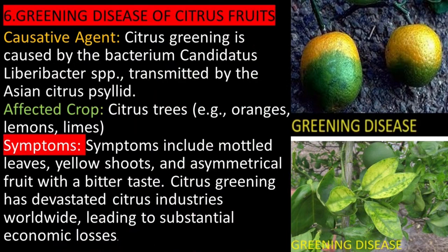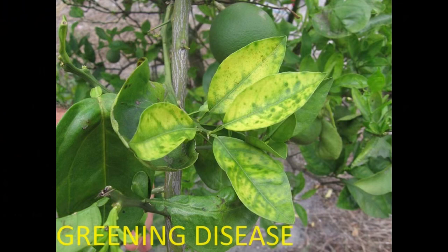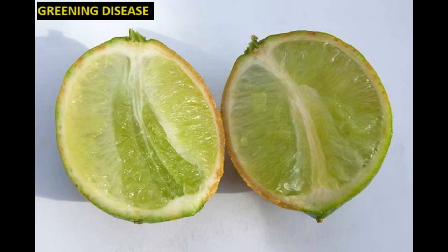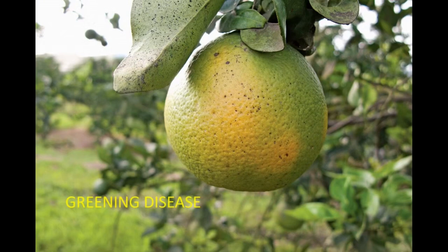Greening Disease of Citrus (citrus greening) is caused by the bacterium Candidatus Liberibacter spp., transmitted by the Asian citrus psyllid. Affected crops are citrus trees, including oranges, lemons, and limes. Symptoms include mottled leaves, yellow shoots, and asymmetrical fruit with a bitter taste. Citrus greening has devastated citrus industries worldwide, leading to substantial economic losses.